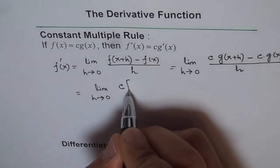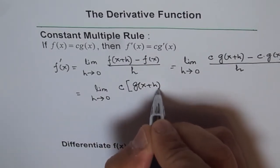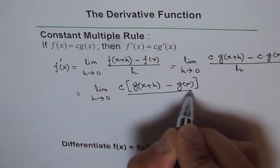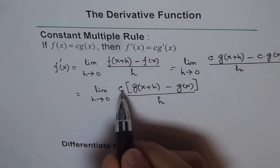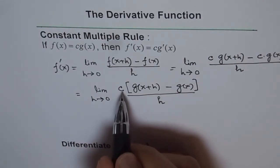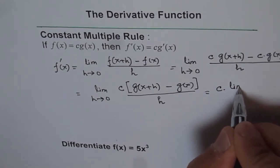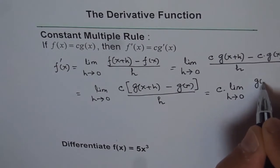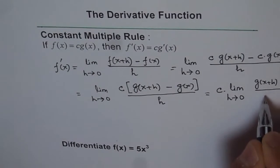We can take c common. So we get c common, and within the bracket we get the limit of g of x plus h minus g of x over h. Applying the limit rules, since c is constant — h may approach 0 or anything, c is not going to change — so we can write this as c times the limit as h approaches 0 of g of x plus h minus g of x over h.